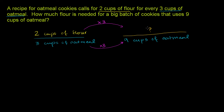We're going to multiply the flour times three, so we're going to have to use six cups of flour. And that answers their question — that's how much flour we need for a big batch of cookies that uses nine cups of oatmeal.